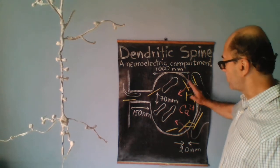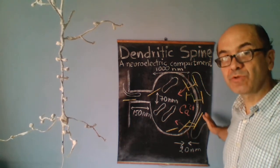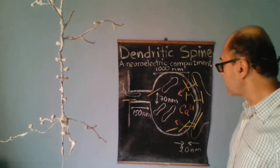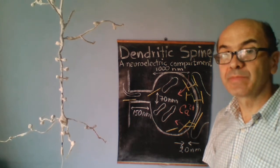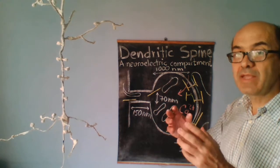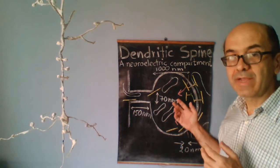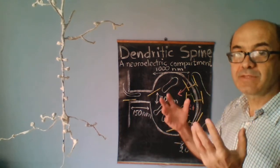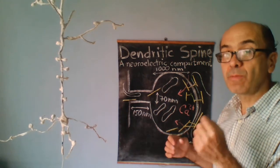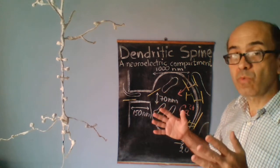The separation between the spine and the connection with other neurons — the axon — is about 20 nanometers. This is important if we consider that the main electrical carrier of the spine, which is calcium ions, is very small, about 0.1 nanometers, or about 1 angstrom.